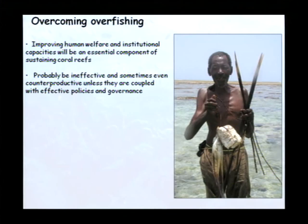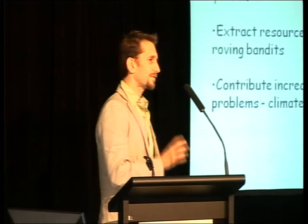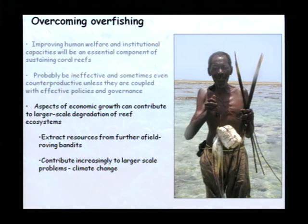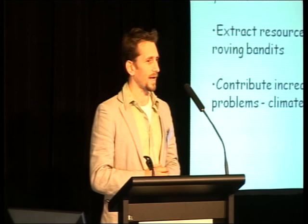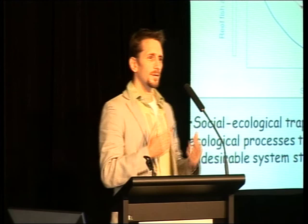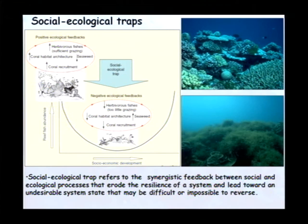In places such as East Africa, where persistent poverty is coupled with resource degradation, improving human welfare is going to be a critical component of sustaining coral reef seascapes. But efforts to improve human welfare in a reef governance context will probably be ineffective and sometimes even counterproductive unless they're coupled with effective policies and good governance, for two key reasons. First, aspects of economic growth can contribute to larger-scale problems confronting coral reef systems — in particular, wealthier societies are able to extract resources from further afield, contributing to the idea of roving bandits, and they contribute increasingly to larger-scale problems such as climate change. For example, the per capita emissions of an Australian are over 100 times that of a Malagasy. Secondly, assumptions that environmental conditions will improve with economic growth do not account for potentially irreversible changes in coral reef ecosystems, which can happen as a result of heavy degradation at the bottom of this curve.